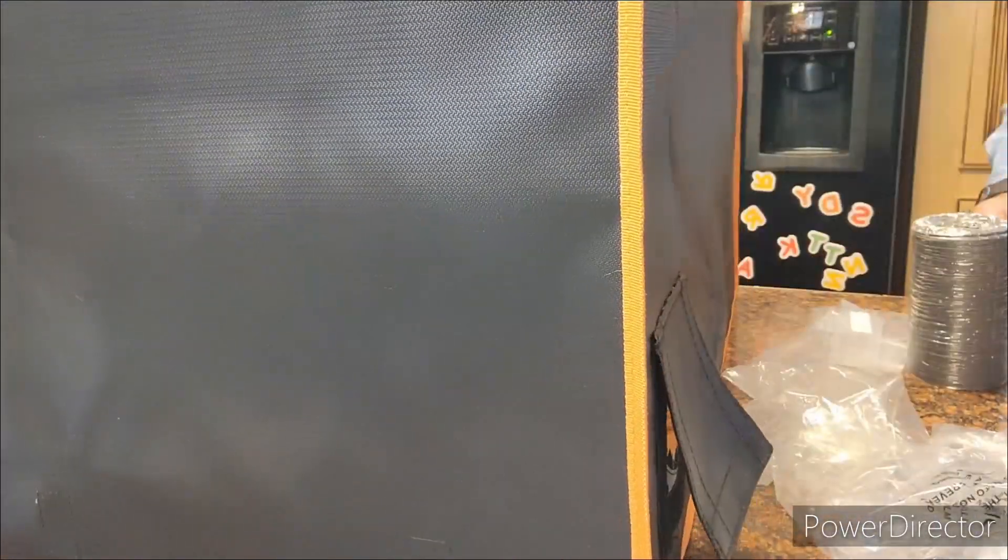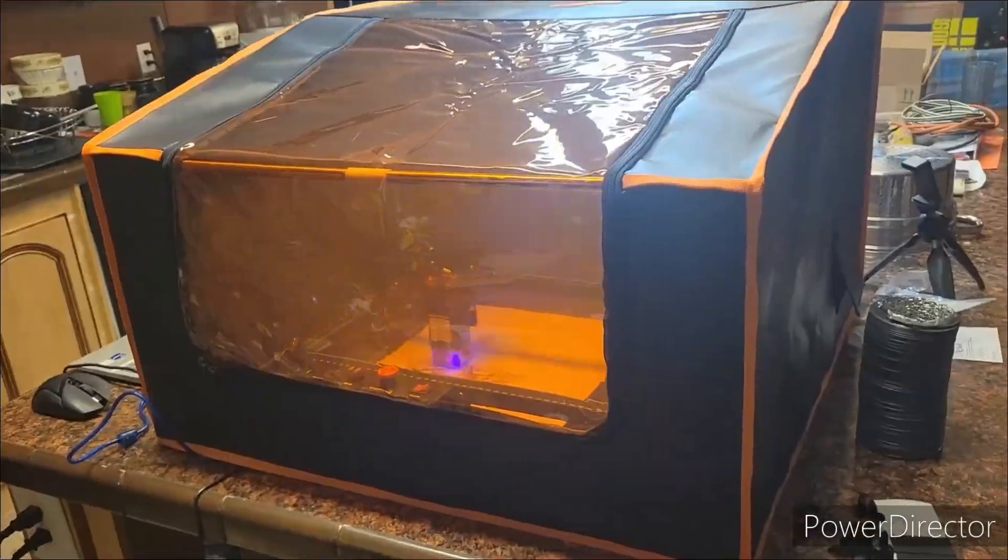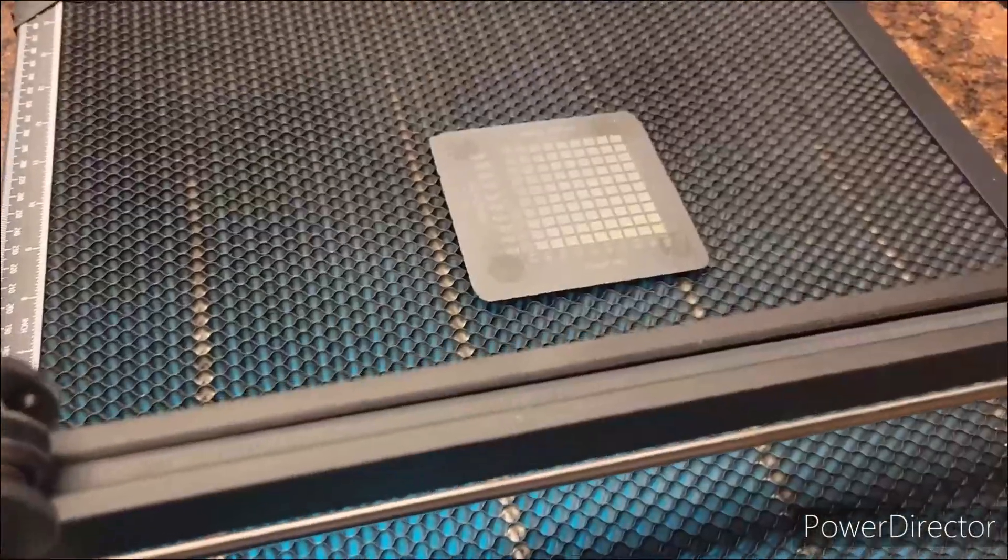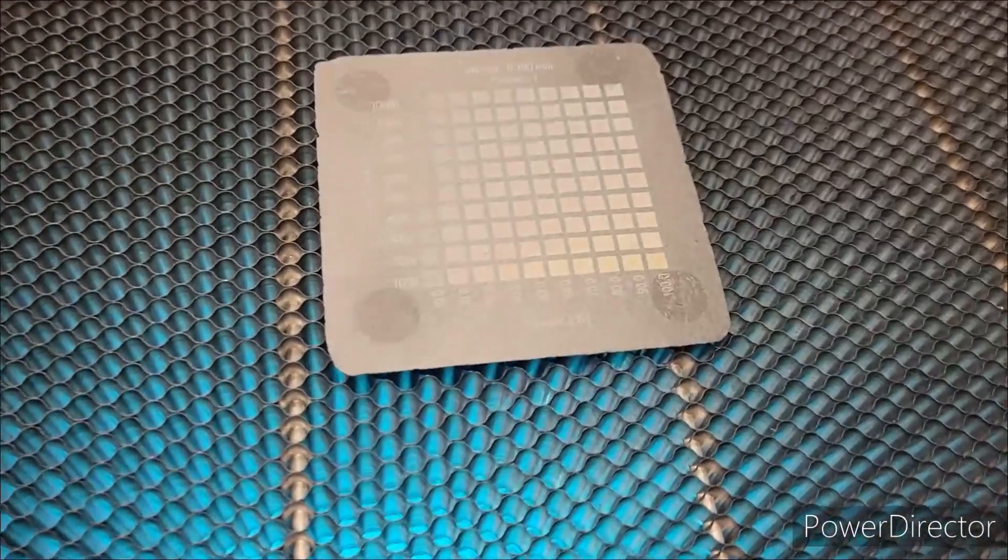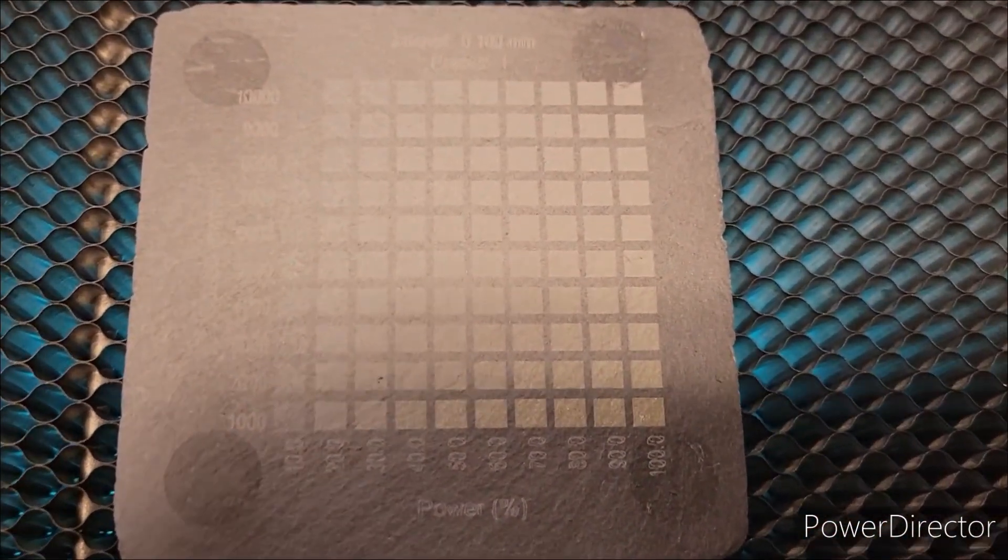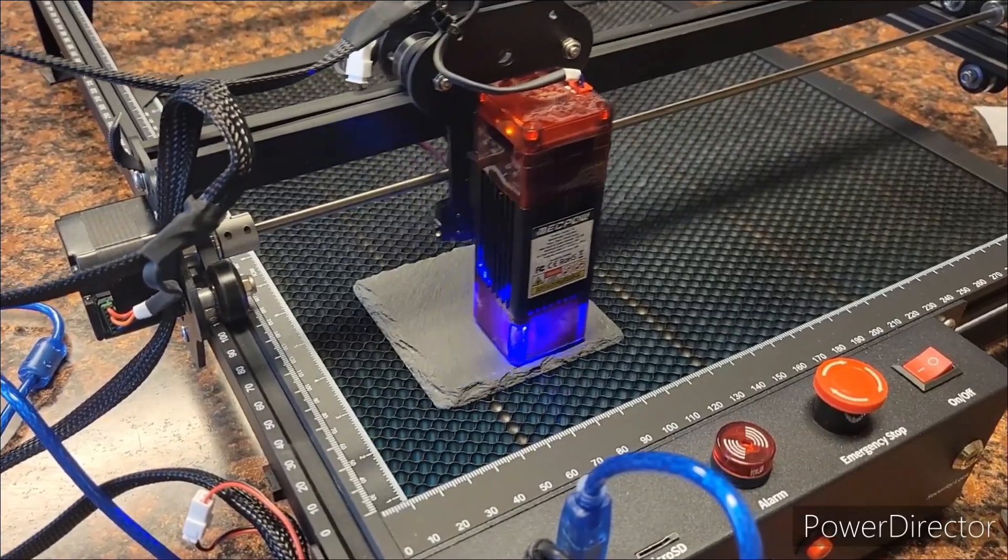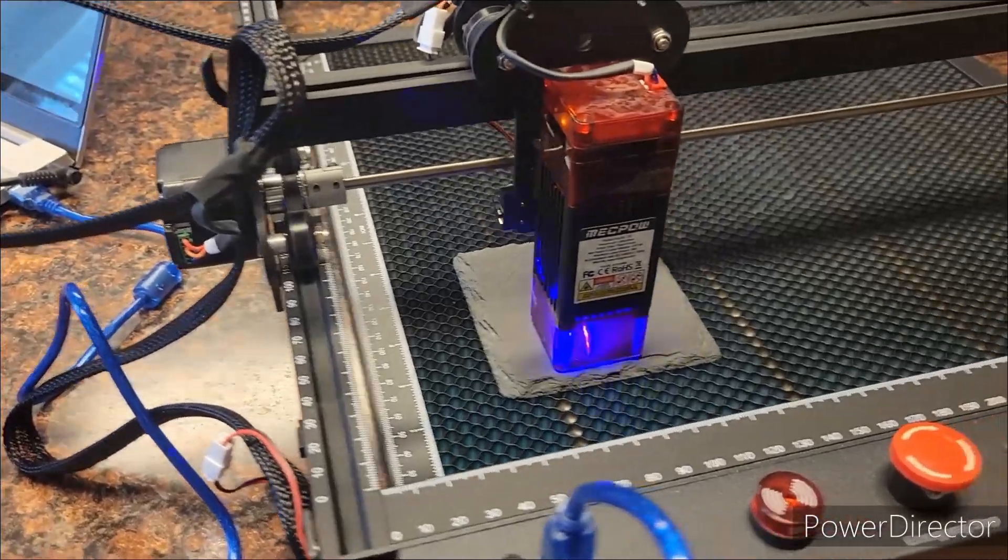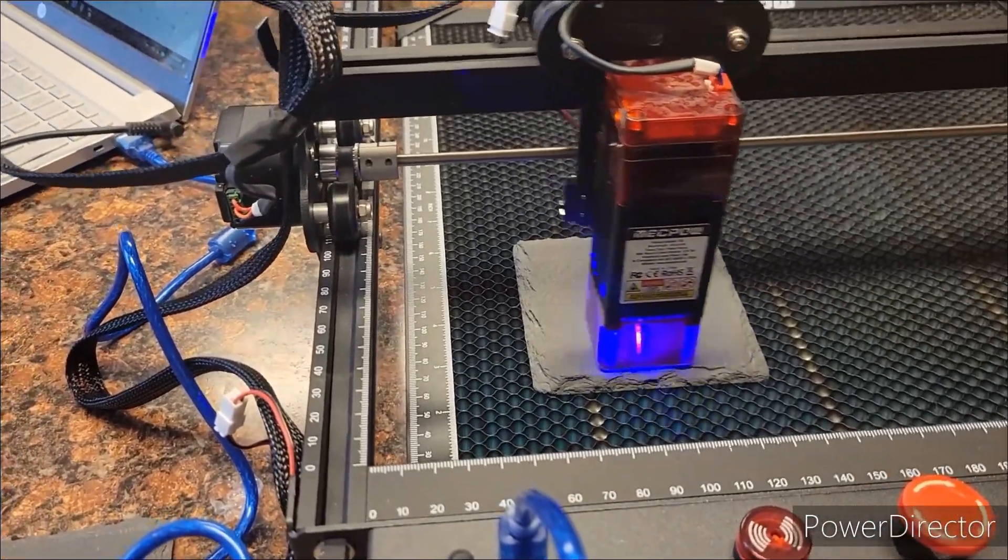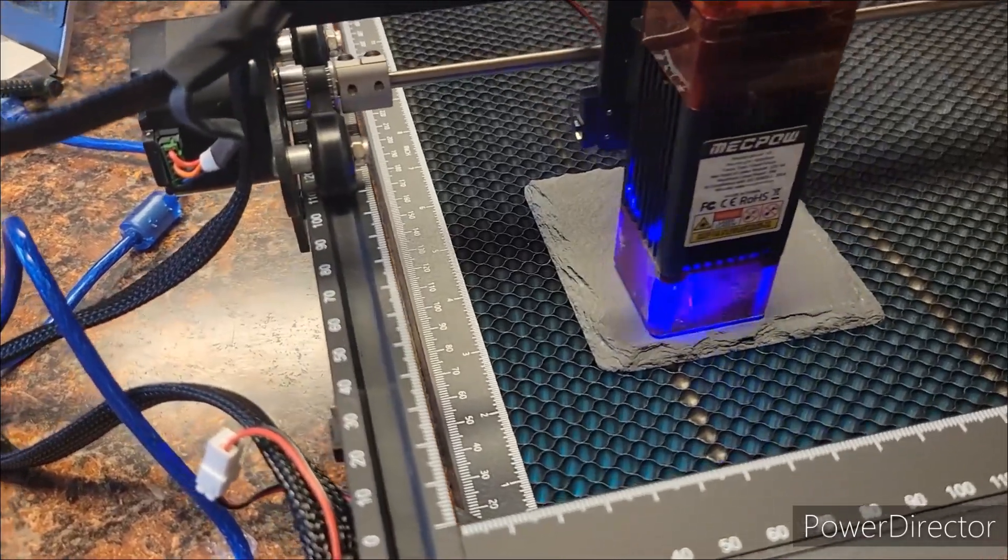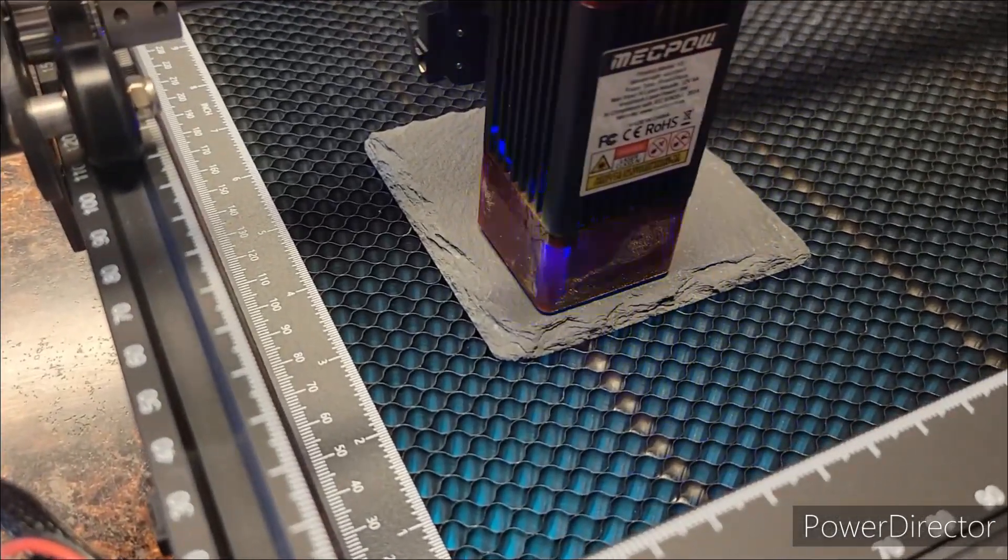So after we got the enclosure all put together, I started running this, that little Gemini logo. I'm not going to bore you with just watching it burn. I did a test pattern here. This is a 5-watt laser. This is from 1000 to 10,000 millimeters per minute test grid that's in Lightburn. So I ended up settled on 6,000 millimeters a minute at 80% power and started burning this little coaster.